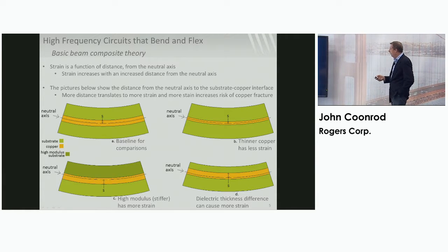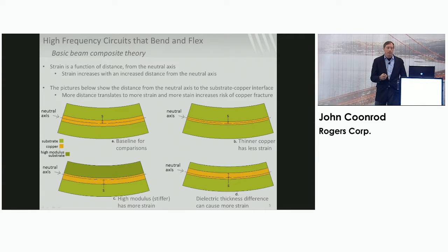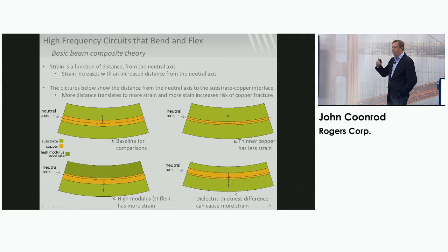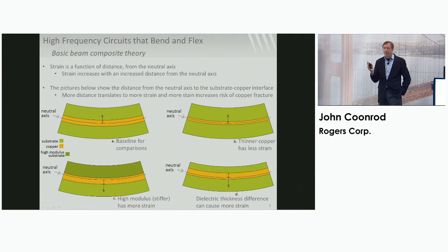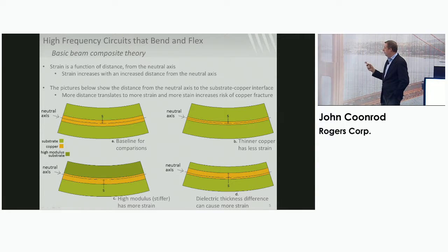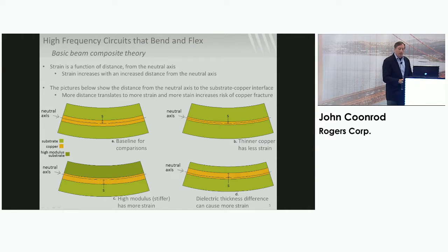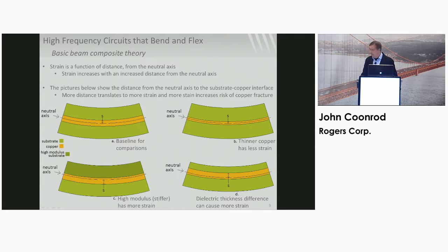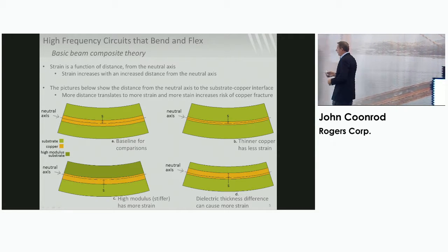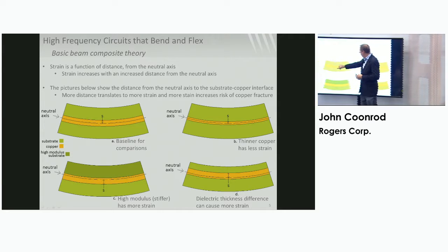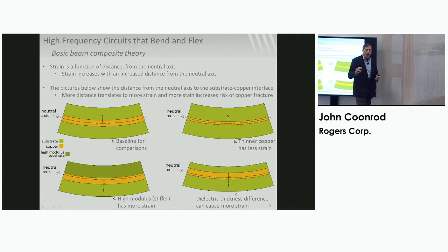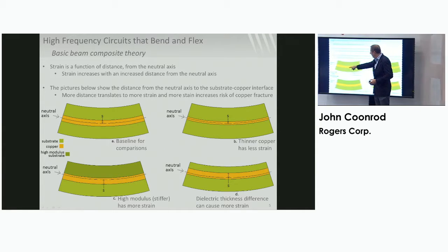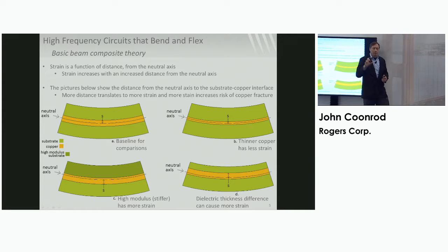This is a good example of a couple of varieties to think about to kind of drive home the neutral axis idea. The first one is our baseline circuit, which is the upper left circuit. That's just a very simple single conductive layer circuit with substrate top and bottom. The neutral axis is going right through the geometric center because the material top and bottom of the copper has the same modulus, same thickness, same everything. The neutral axis, where there is no strain, is going right through the middle of the copper. The amount of strain that you're interested in is probably the substrate copper interface.